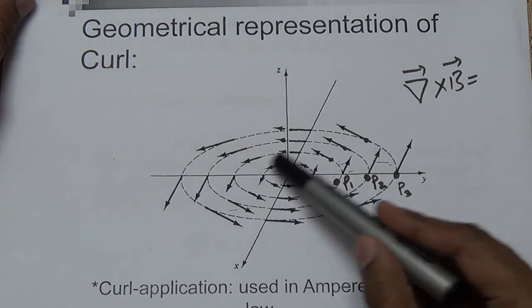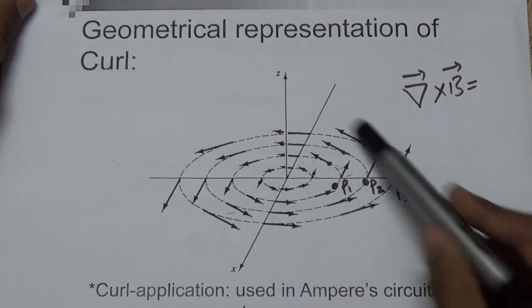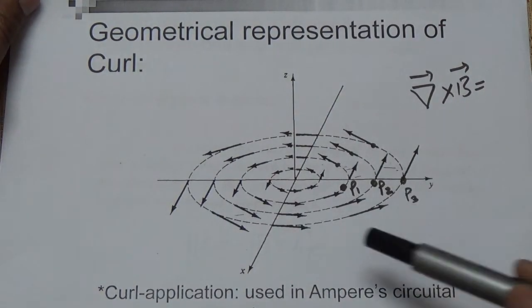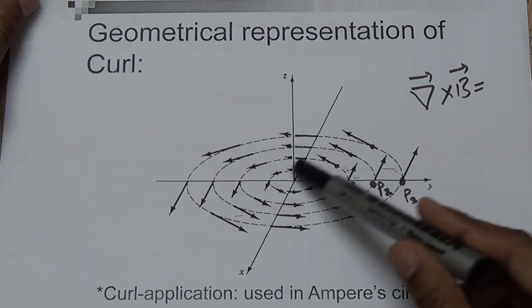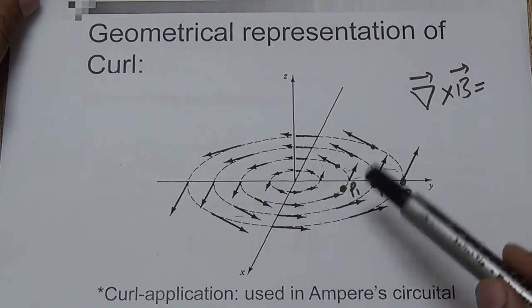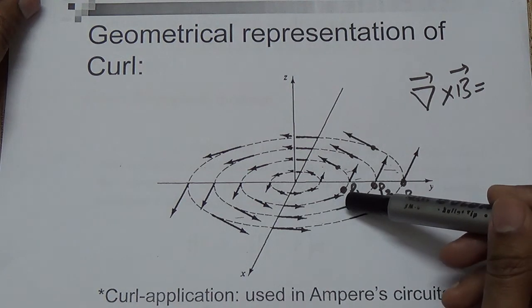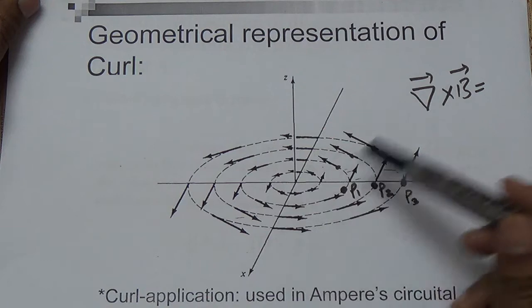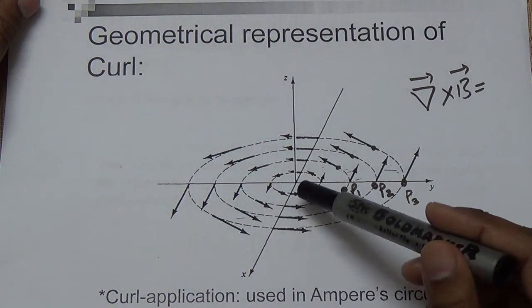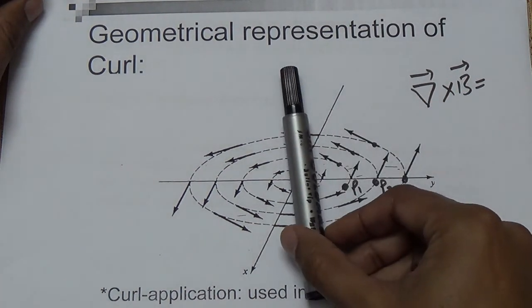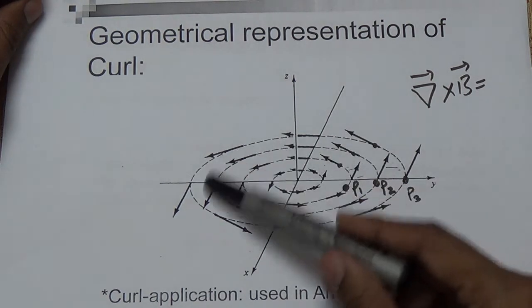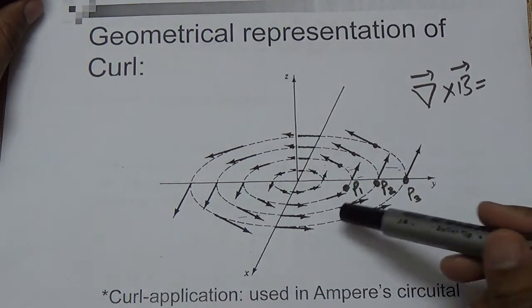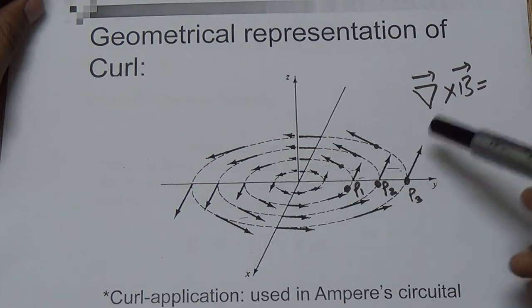We also saw the geometrical picture of the curl. Here we consider a magnetic field rotating in the xy plane — this is the x-axis and this is the y-axis. The curl is in the xy plane, so the field is rotating and we need to find the rate and magnitude and direction of rotation. In Ampere's law, if a current-carrying conductor is along the z direction, the magnetic field develops around it, represented by circles. To find the rate of this curl, we use the formula del cross B.